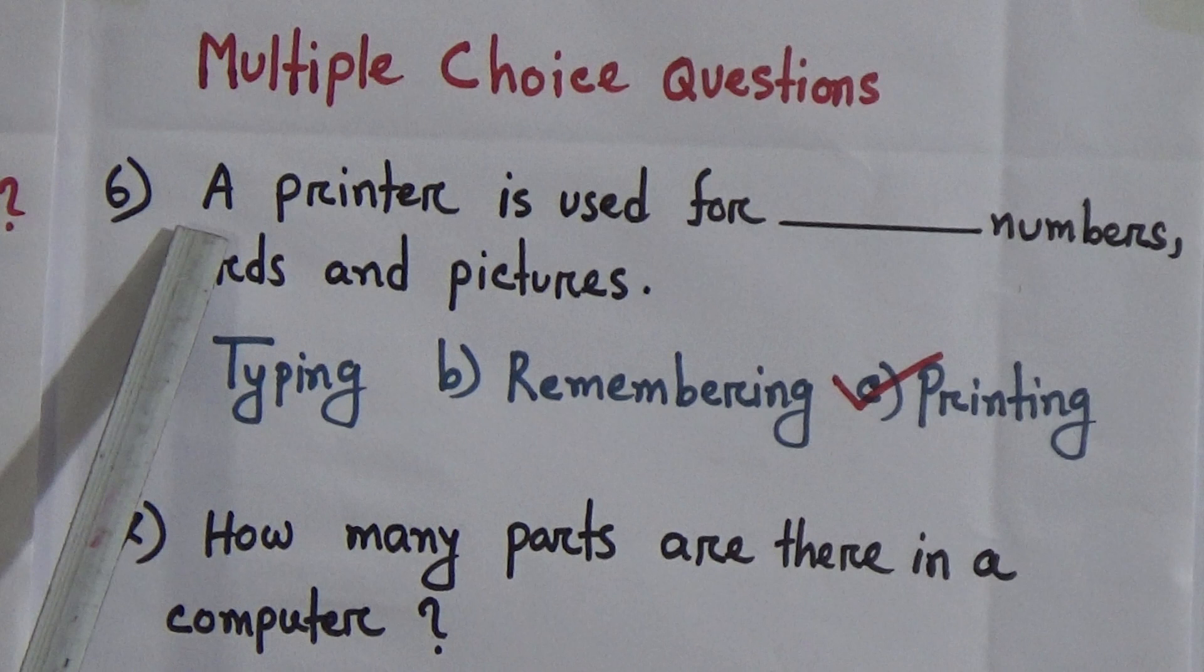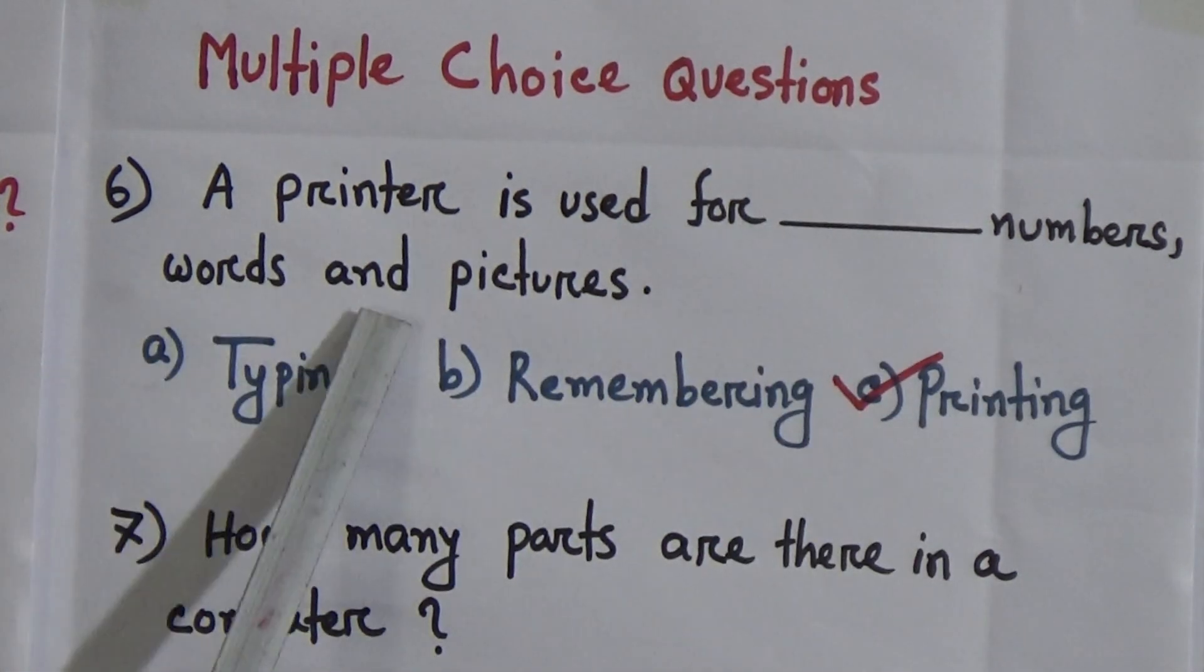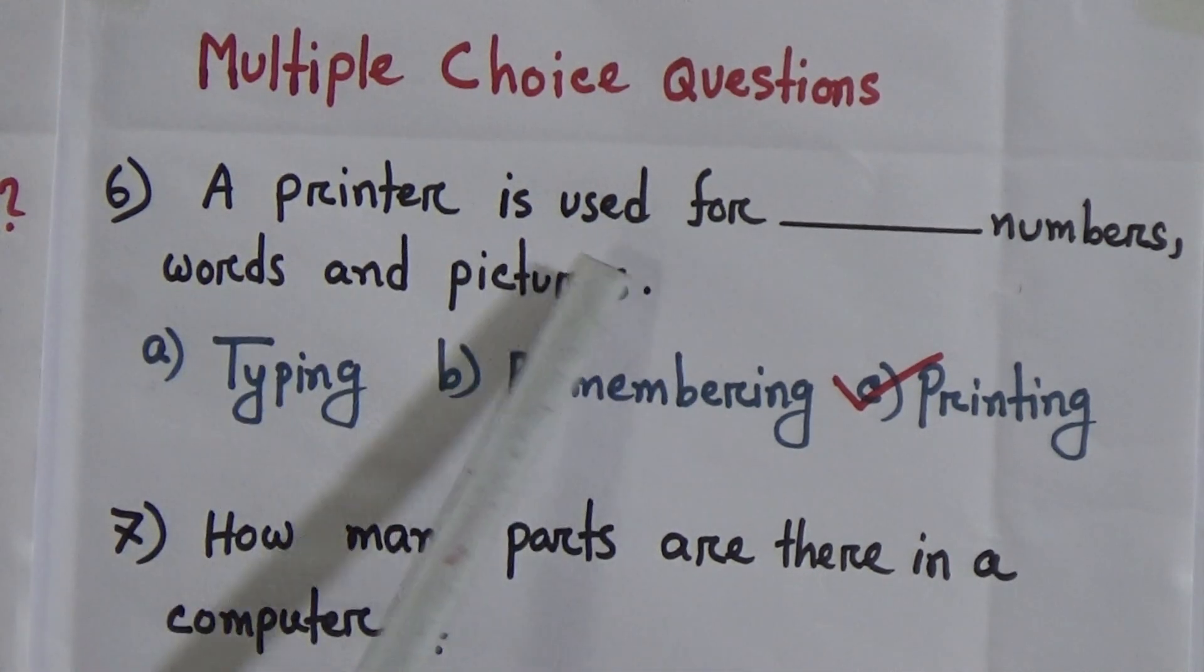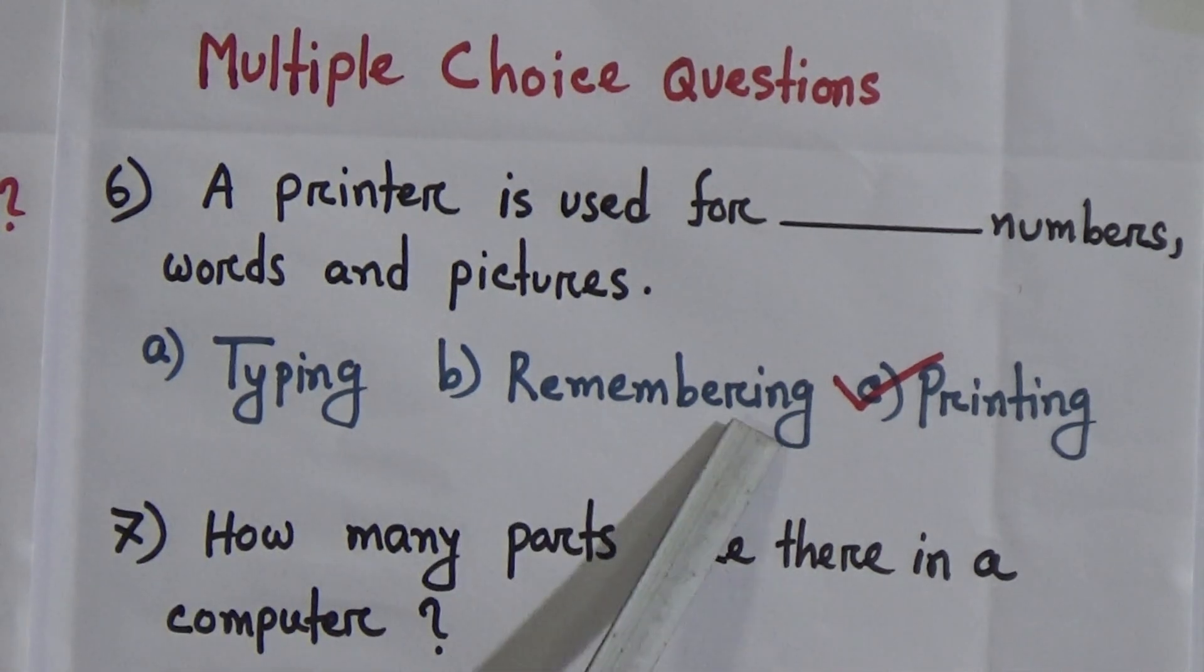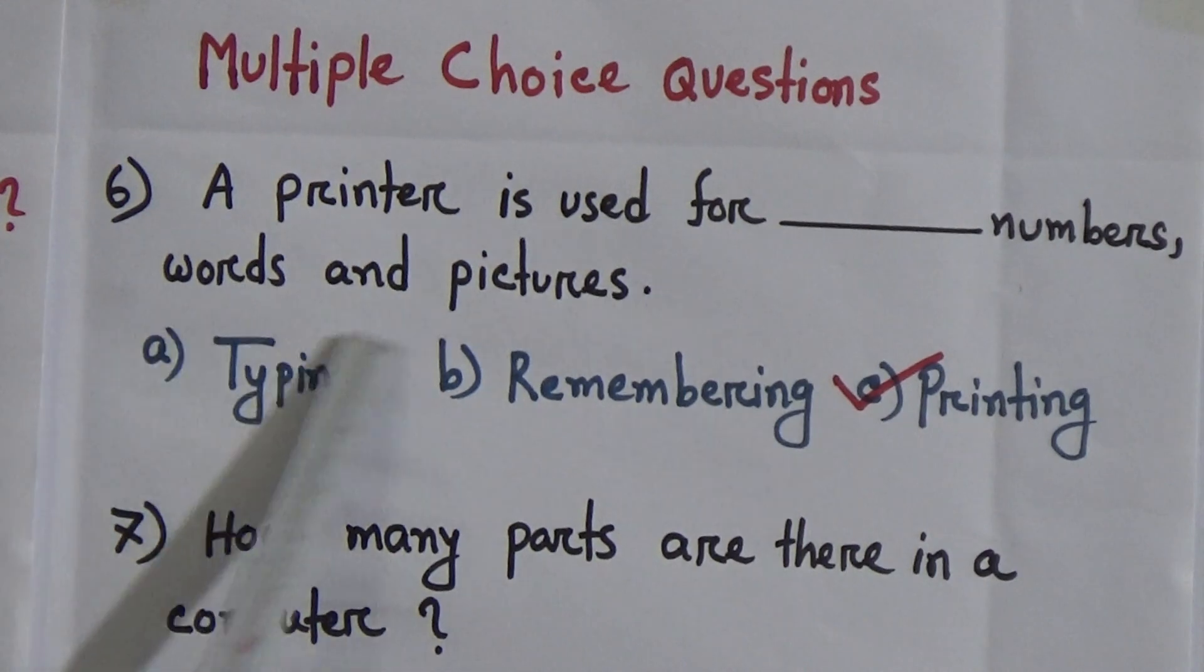Number 6. A printer is used for dash numbers, words, and pictures. We know that a printer prints. So, option A: typing, B: remembering, C: printing. The correct answer will be printing. A printer is used for printing numbers, words, and pictures.